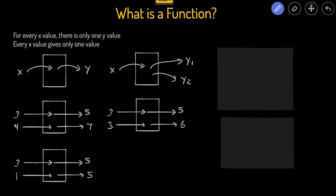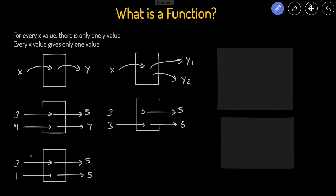Is this going to be a function or not a function? Well, this would be a function because if we put in 3 we get 5, and if we put in 1 we get 5. So for every one unique x, we get a y. Although there are two x's that give us the same y, that's okay, because the definition is: for every x gives one y. It's okay for one output to have multiple different inputs.